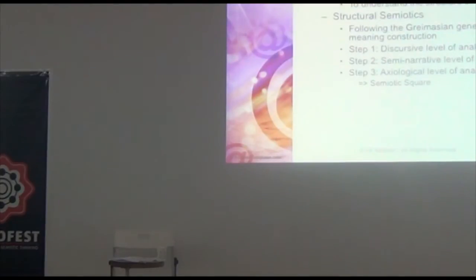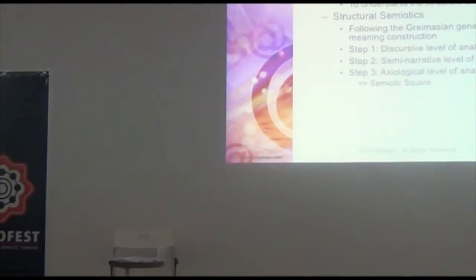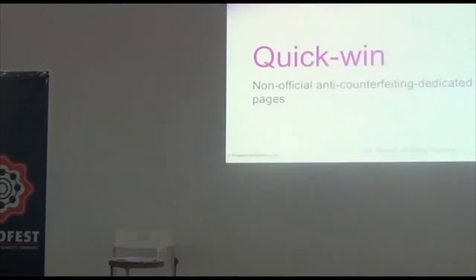We follow the Greimasian trajectory of meaning building — meaning construction — in three steps, as a reminder. First, the most obvious phase of observation: the discursive level of analysis. Then the semi-narrative layers of analysis — basically the rhetoric. And then the axiological level of analysis — the core values of the Facebook page discourses — which will be represented with the most useful visual tool that everybody can understand, even non-semiotician people: the semiotic square.